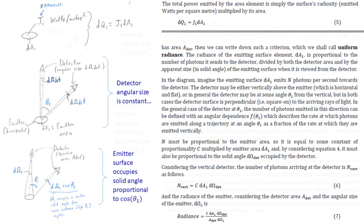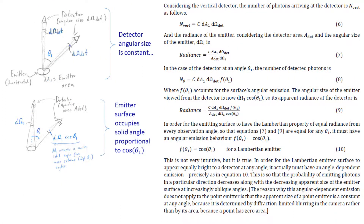In the case of the detector at some angle θ1 from the vertical, the number of detected photons is given by equation 8, which is the same as equation 6 but includes the angular dependence term f(θ1). The angular size of the emitter when viewed from this angle along direction θ1 is now dω1 · cos(θ1). So its apparent radiance at the detector is now given by equation 9, which has c · dA1 · dω_det · f(θ1) on the numerator and a_det · dω1 · cos(θ1) on the denominator.